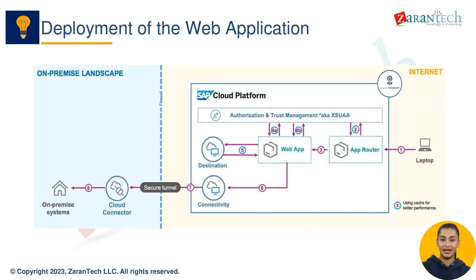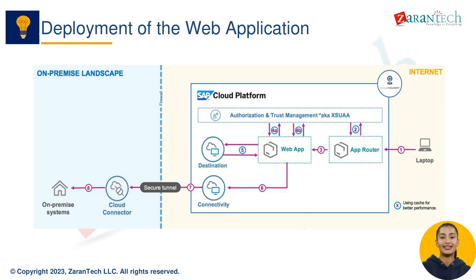SAP Cloud Platform provides various connectivity options to integrate with on-premise systems, cloud services, and other applications. The SAP Cloud Connector establishes a secure tunnel between your on-premise systems and the SAP Cloud Platform. Destinations define the connection details to the target systems or services. SAP Cloud Platform also offers additional connectivity services like SAP Cloud Platform Integration and SAP API Management.